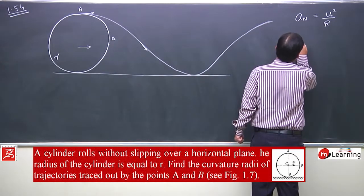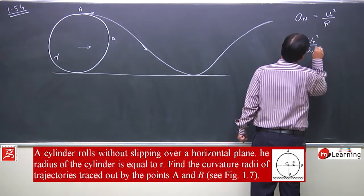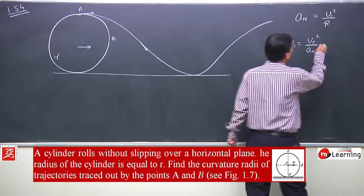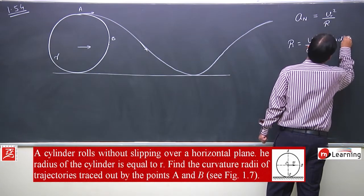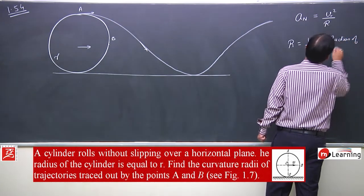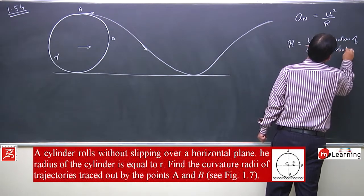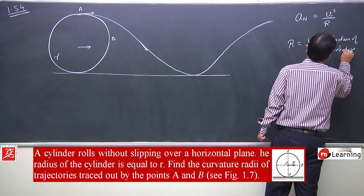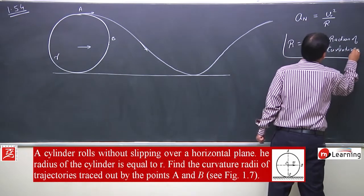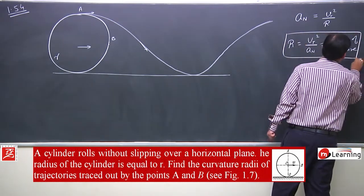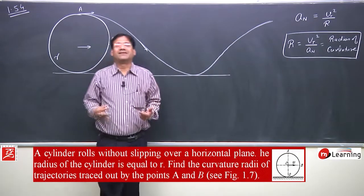So r, the radius of curvature, is always equal to tangential velocity squared divided by normal acceleration. This r is the radius of curvature. Now let us apply this concept.